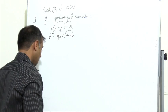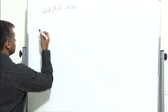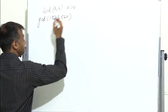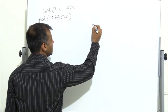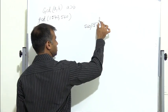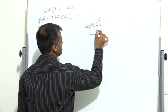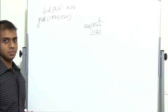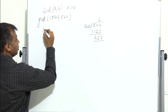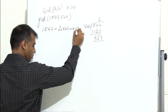Let us take an example and find the GCD of 1547 and 560 using the Euclidean algorithm. The first step: I divide 1547 by 560. I get quotient 2 and remainder 427. So I can write 1547 equals 2 into 560 plus 427.